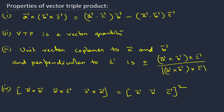Now let us see some properties. The formula for a cross (b cross c) is: first dot last into second minus first dot second into last, that is (a·c)b - (a·b)c. To remember: first dot last into second, minus first dot second into last. You can prove this by taking specific vectors and comparing left hand side and right hand side separately, but it is a long procedure, so the proof part is skipped here.